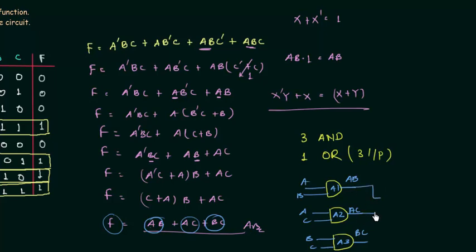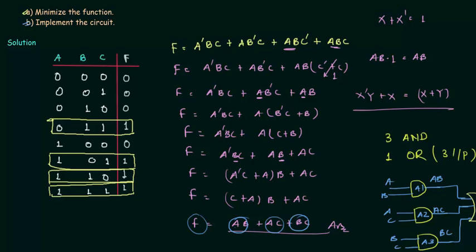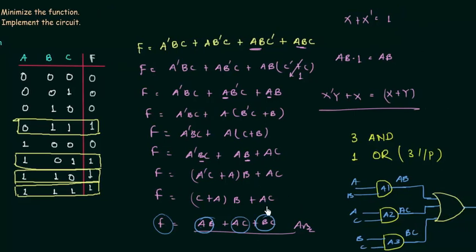The output of the OR gate is the function f. This completes the implementation part of the problem. This is how a statement problem will be asked in the exam. If you have any doubt regarding any part of this lecture, you may ask in the comment section.